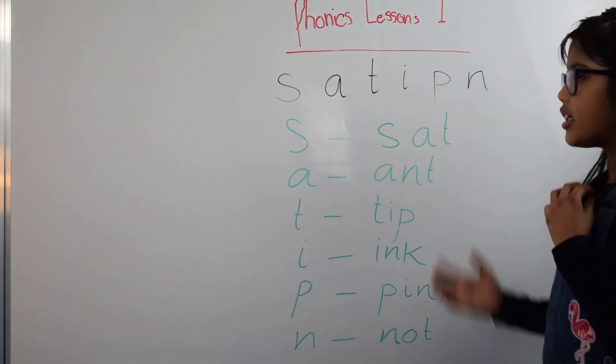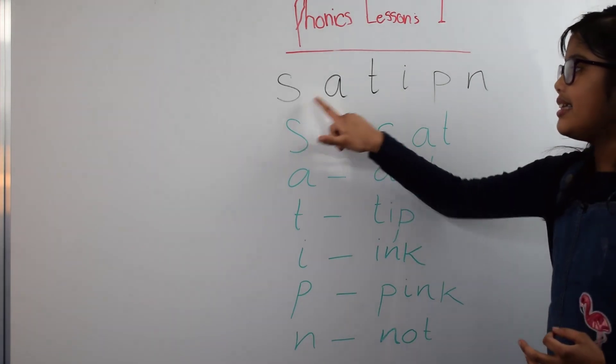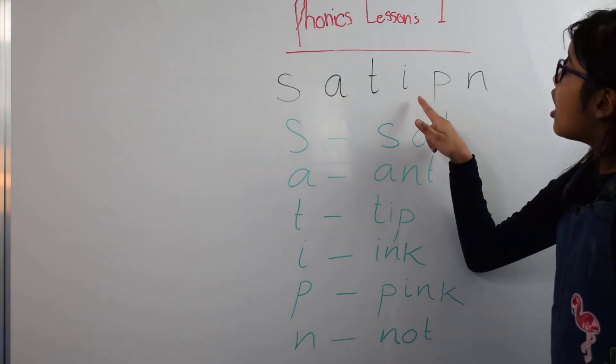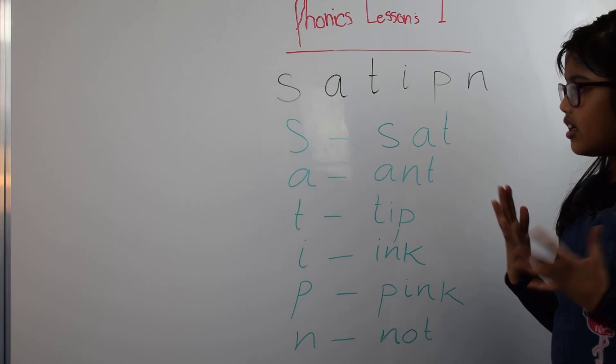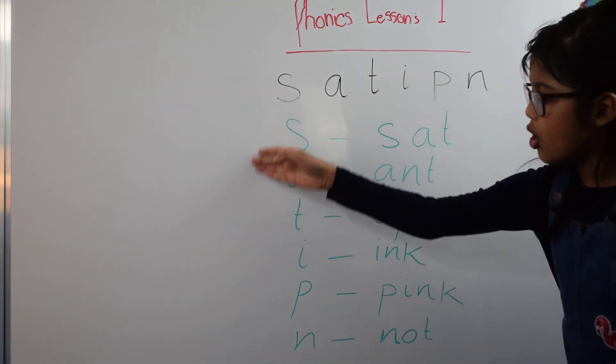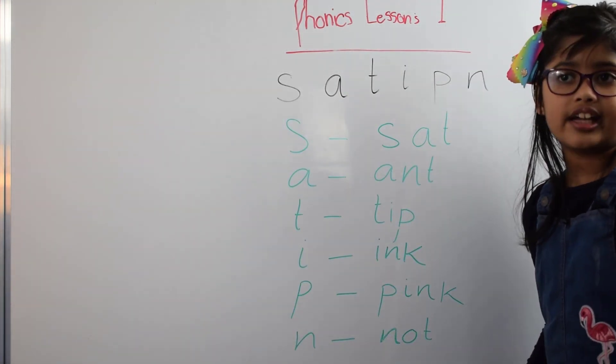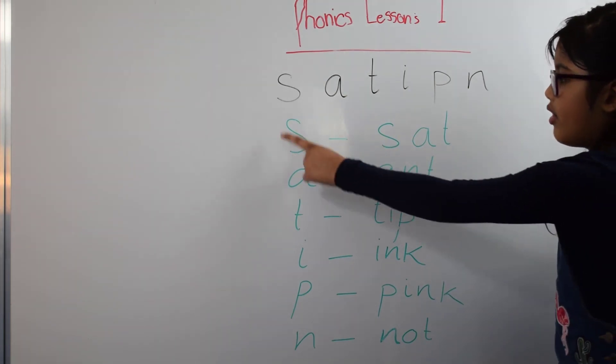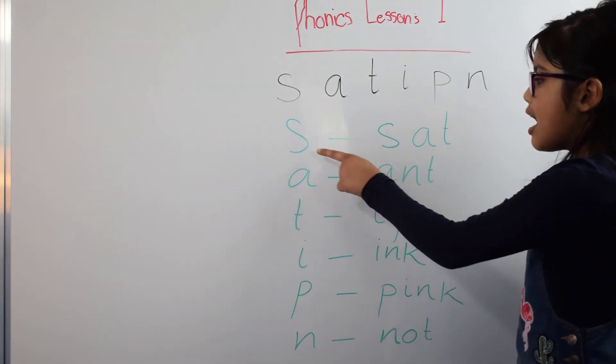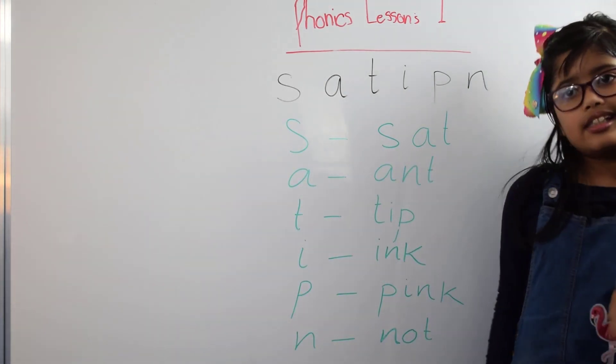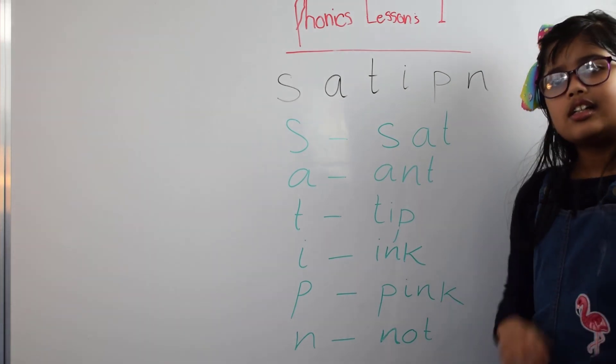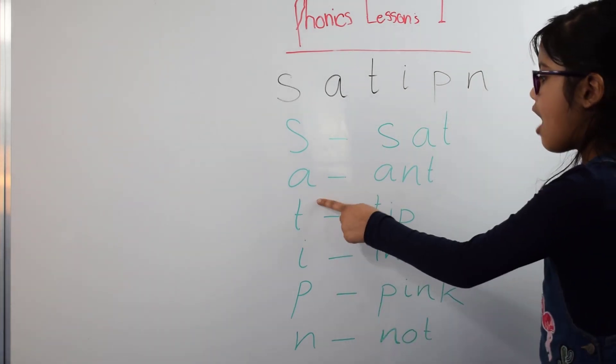Phonics lesson 1 contains the letters S, A, T, I, P, and N. Now we are going to go over what words they can be for all the letters. S for sat, S-A-T sat. A for ant, A-N-T ant.